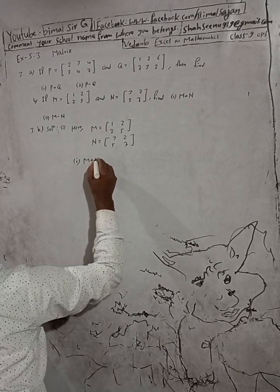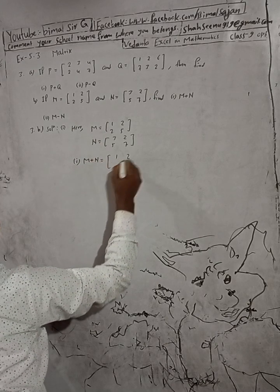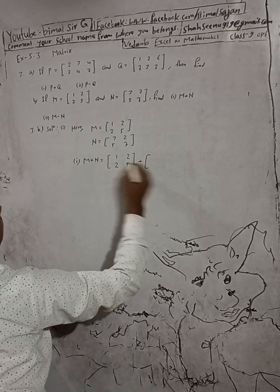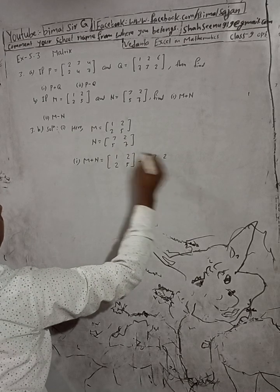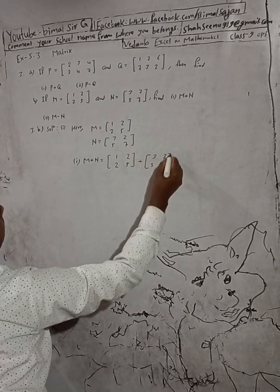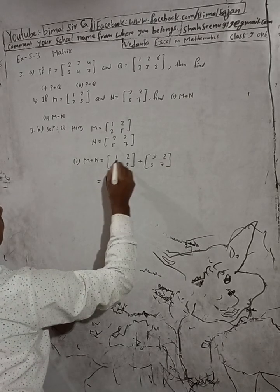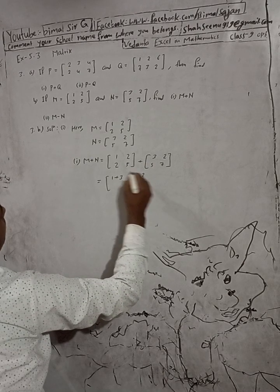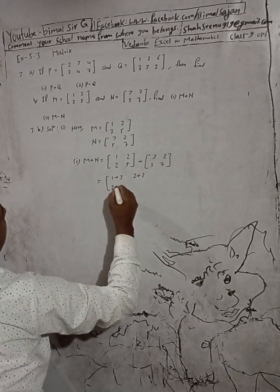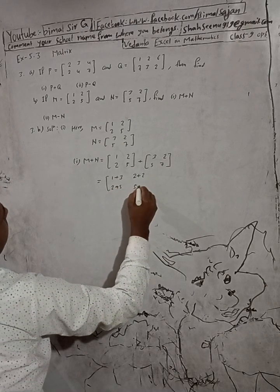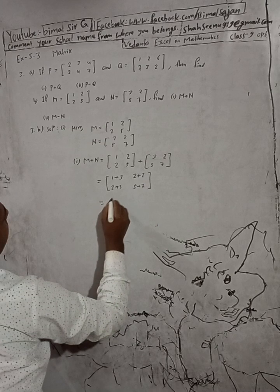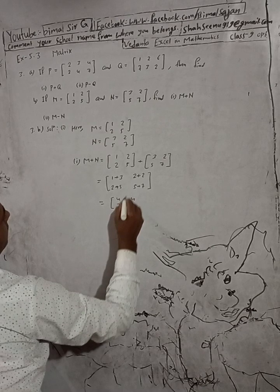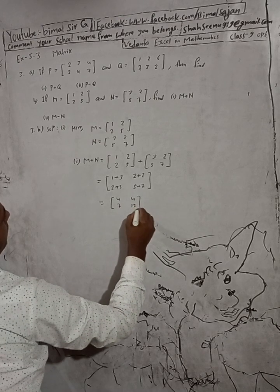YM plus YN equals [1, 2 / 2, 5] plus [3, 2 / 5, 7]. Computing: 1 plus 3, 2 plus 2, 2 plus 5, 5 plus 7. Results: 1 plus 3 is 4, 2 plus 2 is 4, 2 plus 5 is 7, 5 plus 7 is 12. So the result is [4, 4 / 7, 12]. Now number 2.